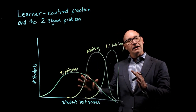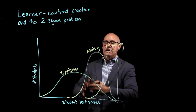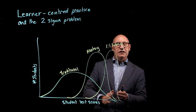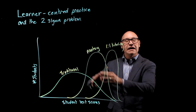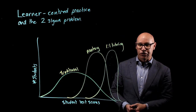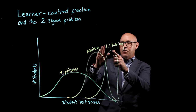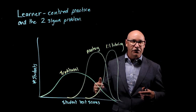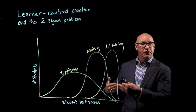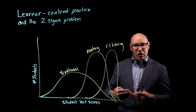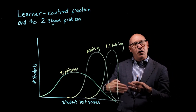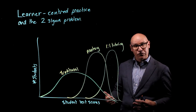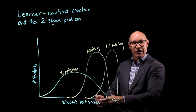Bloom then spent a great deal of time trying to solve this two sigma problem — trying to get this same improvement as one-on-one tutoring in a classroom of 25 or 30 students. He recognized that mastery learning is a large part of that. The idea with mastery is that students progress through the course at their own pace and periodically, when ready, they sit milestone assessments, and only if they demonstrate mastery on those assessments are they allowed to move on to the next part.